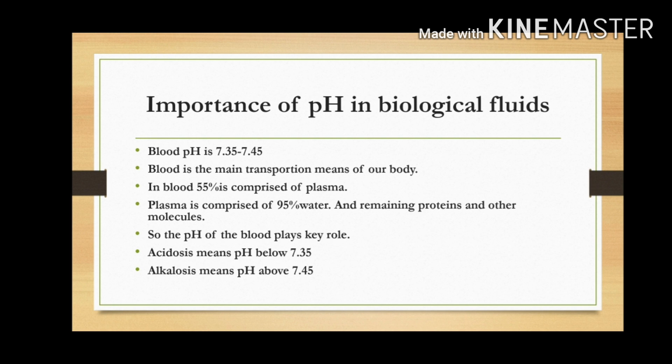One of the main important biological fluids is blood. Its pH is 7.35 to 7.45. It is the main transportation medium — it transports food and gases. Blood contains 55 percent plasma, and of that plasma, 95 percent is water.